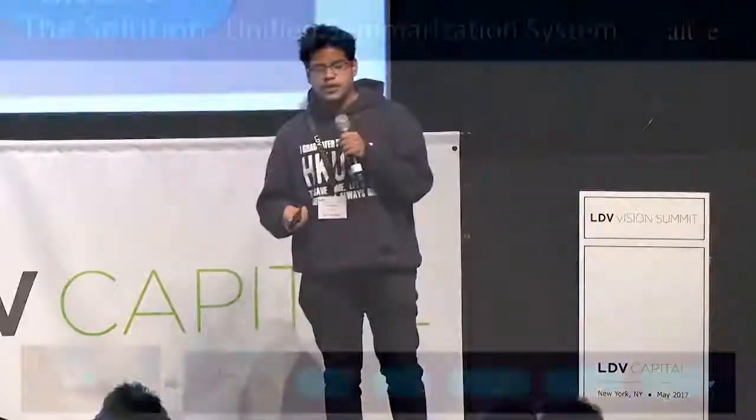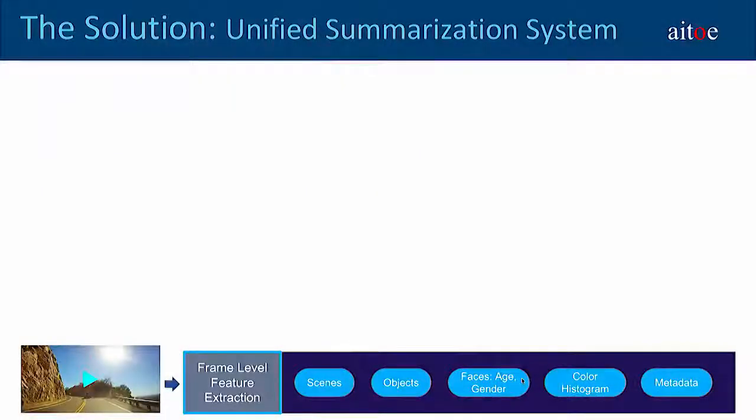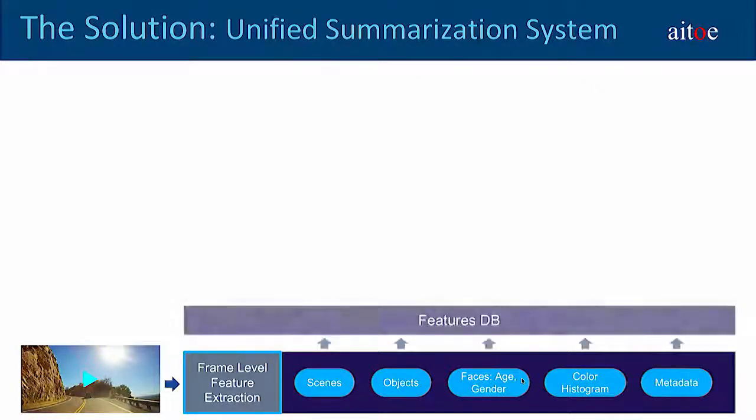Here's how it works. A video is submitted to the pre-processing unit, which does frame-level feature extraction using deep models — covering scenes, objects, faces, and so on. These features then get stored in the features database.